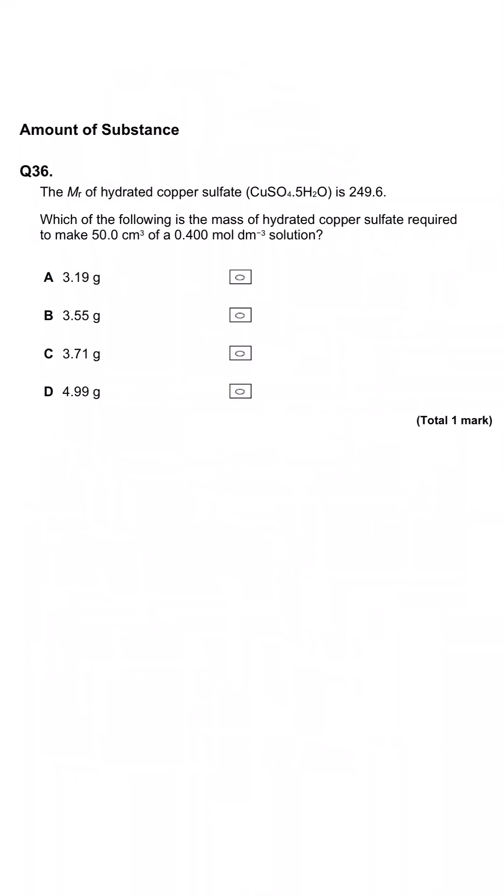This question is telling us that the MR of hydrated copper sulfate, formula shown here, is 249.6. And we're being asked what the mass of hydrated copper sulfate is that is required to make 50 cm cubed of 0.4 moles per dm cubed of solution. And so what we need to do to find mass ultimately is multiply the MR by the moles. And so therefore, given that we've got the MR, we're trying to find out what the moles are.